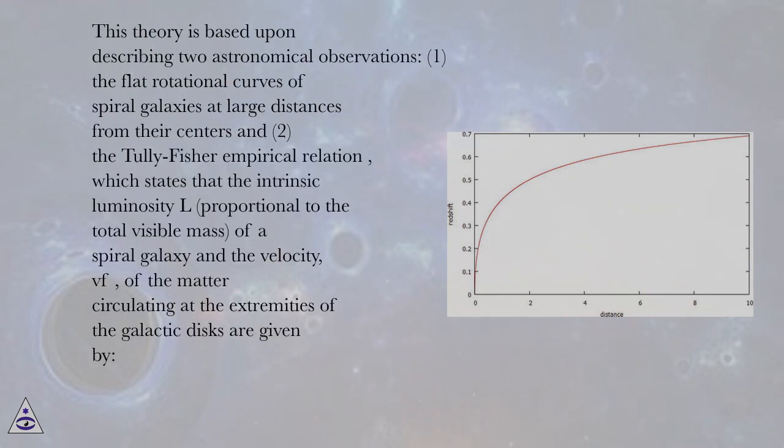This theory is based upon describing two astronomical observations: one, the flat rotational curves of spiral galaxies at large distances from their centers and two, the Tully-Fisher empirical relation.